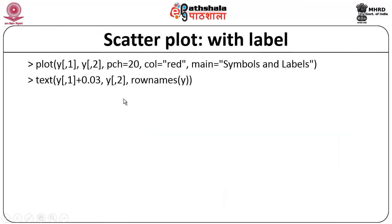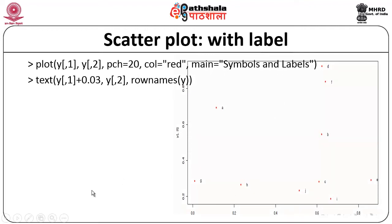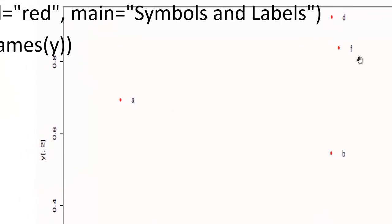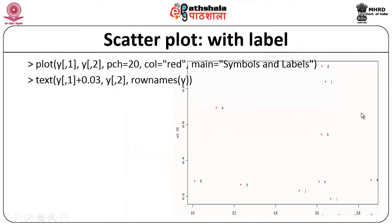If you want to generate labels in the scatter plot, you need to call the plot function followed by the text function. The text function will generate various text labels and attach those labels to the random points generated. Executing these two commands produces a scatter plot where various coordinates are appended with text labels like a, b, c, j, h, g, etc. So given a scatter plot, if you want to assign a text label to coordinates, use the text function.